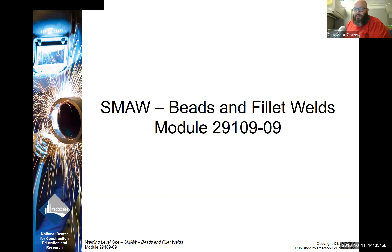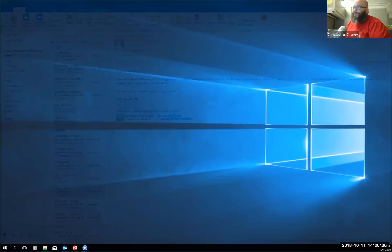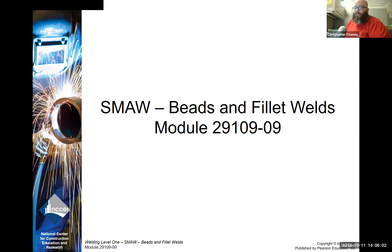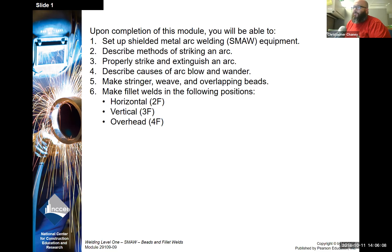Welcome to the SMAW Beads and Fillet Welds Module 9 for WT-71. Upon completion of this module, you'll be able to set up shielded metal arc welding equipment, describe methods of striking an arc, properly strike and extinguish an arc, describe causes of arc blow and wander, make stringer weave and overlapping beads, and make fillet welds in the following positions: horizontal, vertical, and overhead.